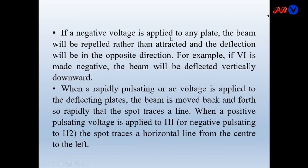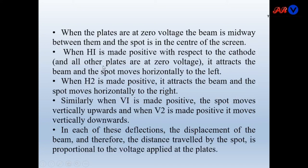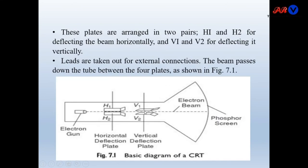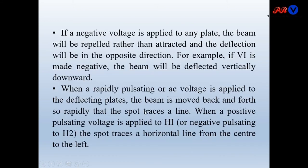If a negative voltage is applied to any plate, the beam will be repelled rather than attracted and the deflection will be in the opposite direction. For example, if V1 is made negative — V1 being on the upper side — then it will repel the beam and the beam will move downward. So when V1 is negative, the beam will deflect vertically downward.